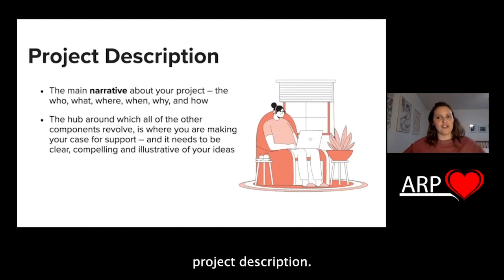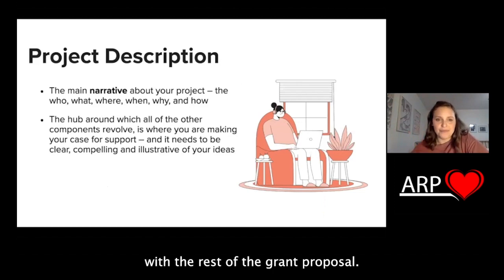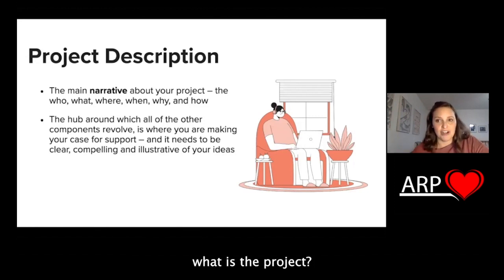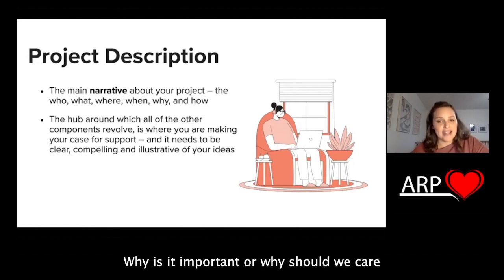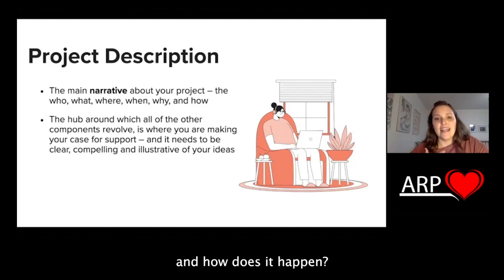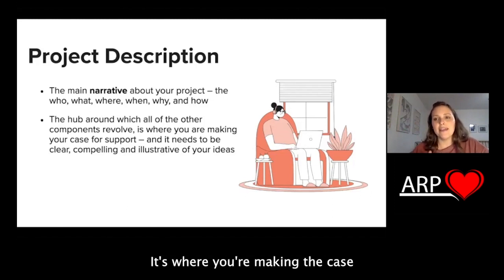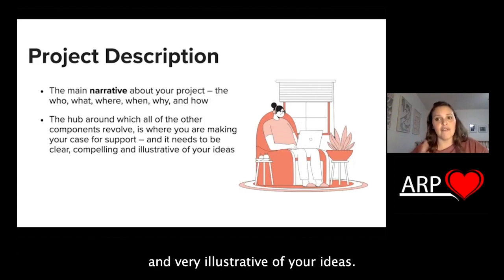So let's get into the project description. The project description is the main narrative about your project. It answers: who is involved in creating the project, what is the project, where and when is it going to happen, why is it important or why should we care, and how is it going to happen — how do you create it. It's the hub around which all other components of your grant proposal revolve. It's where you're making the case for support, and it needs to be very clear, very compelling, and very illustrative of your ideas.